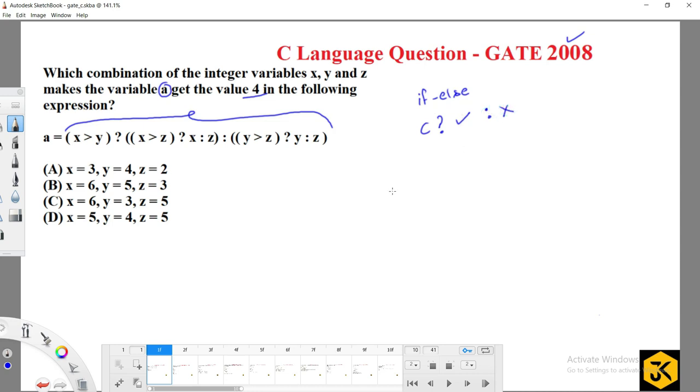They're asking to get the value of variable a to be 4. You can use a substitution approach: substitute values like x=3, y=4, z=2 and check which answer gives a=4. But here's a clue: if you observe this expression, are there any arithmetic operators like addition, subtraction, or multiplication? No.